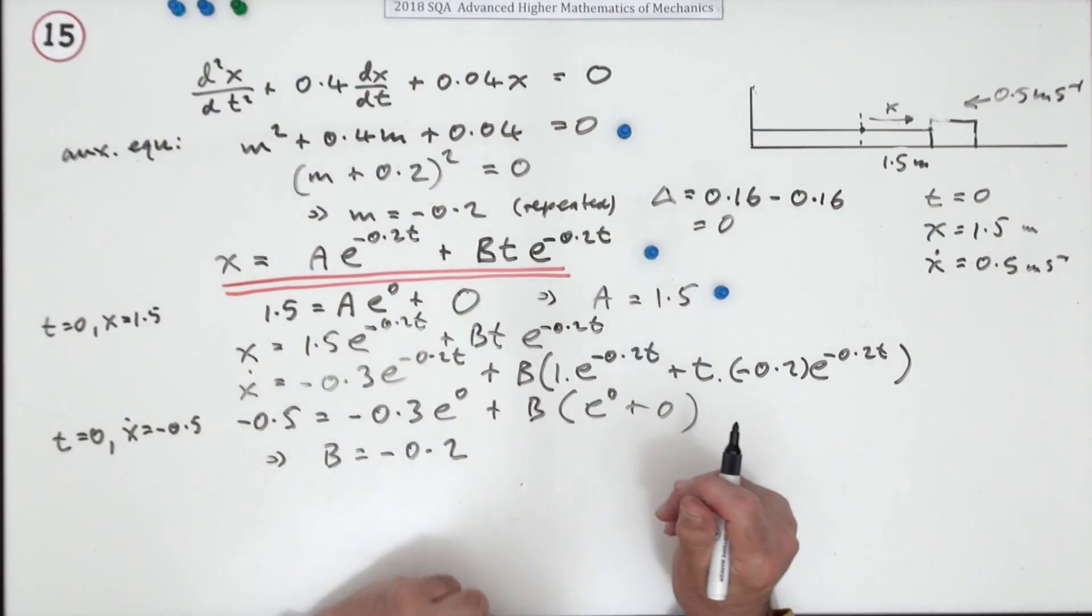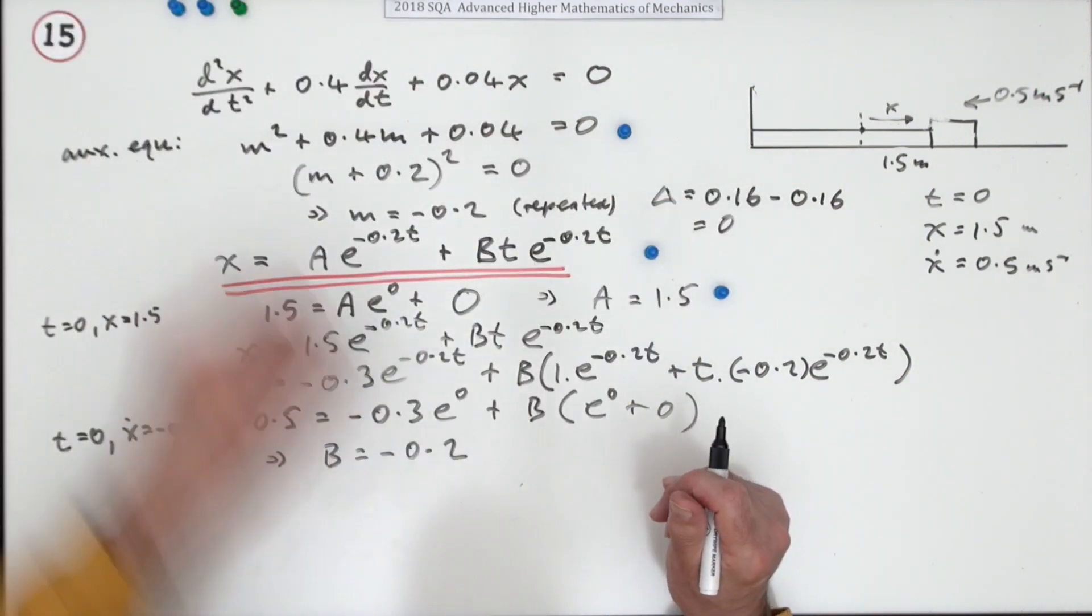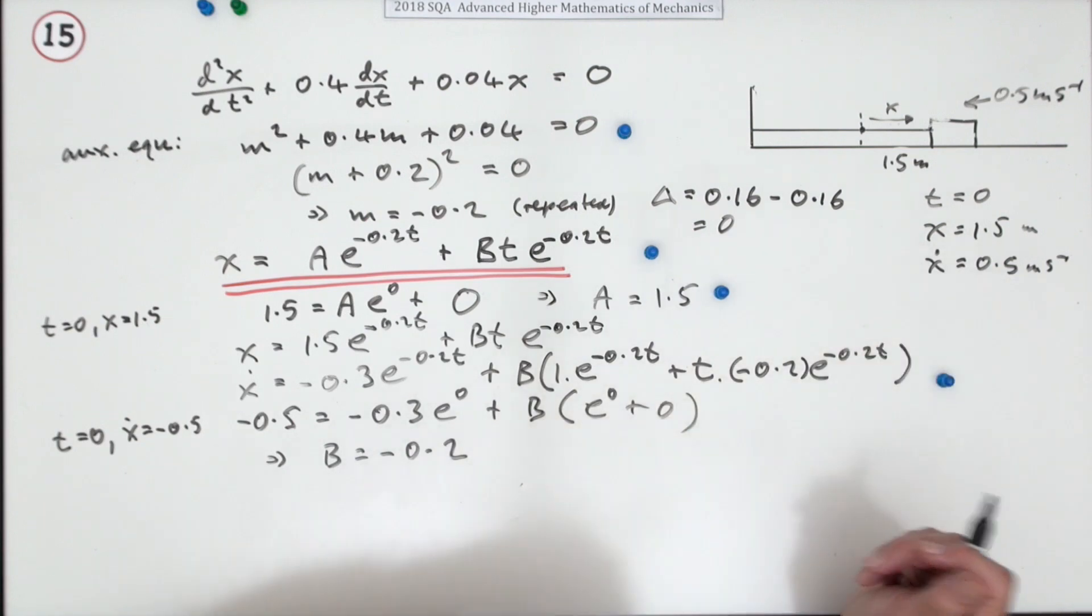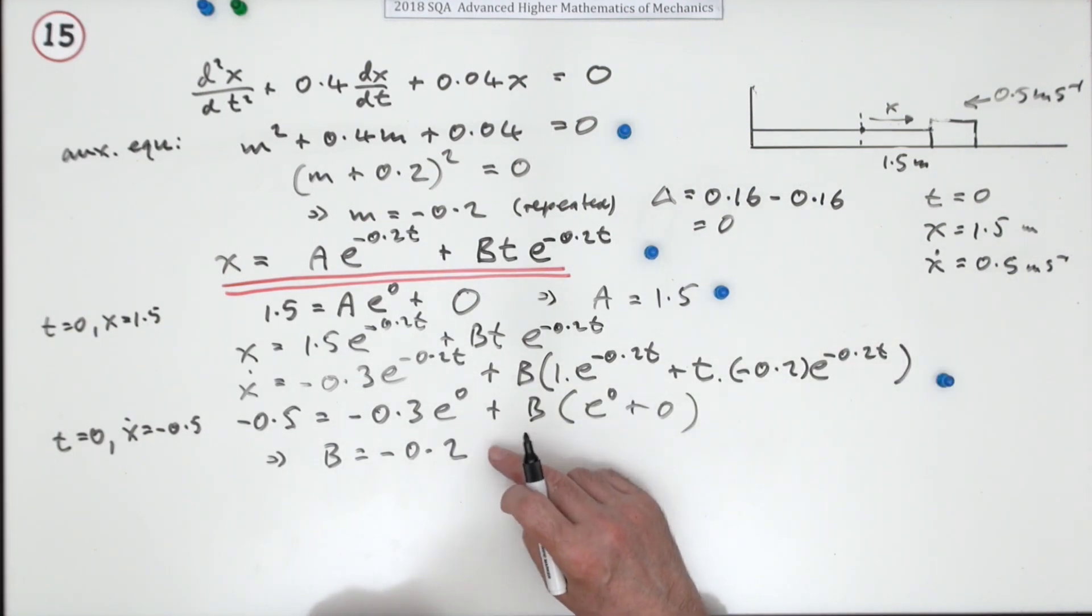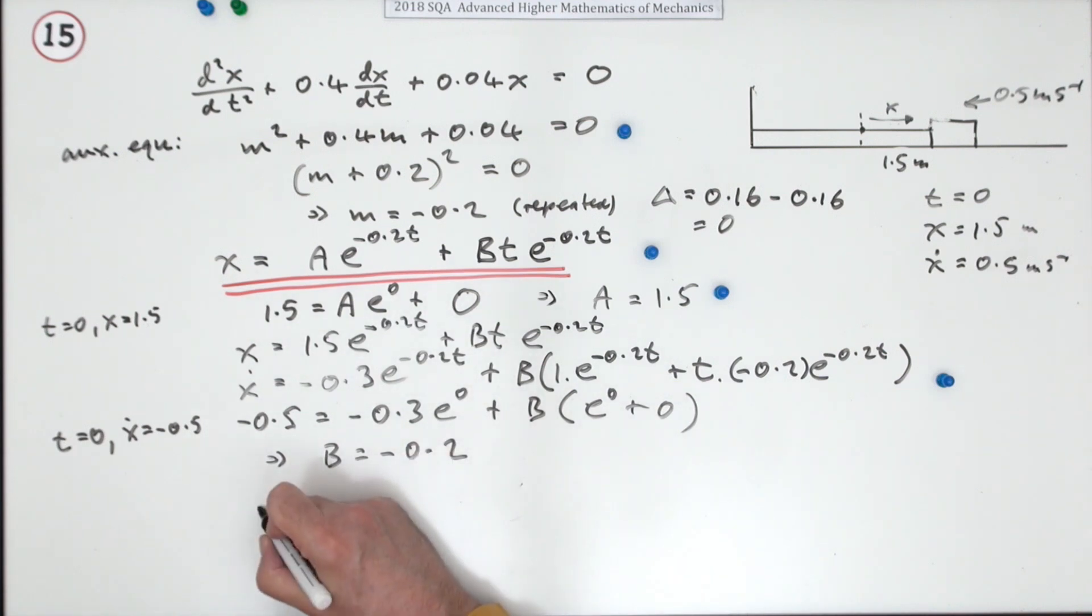Because B... that's just 1, that just means B is going to equal, and that's just 1, that across to there, which is negative 0.2. Now I forgot the marks. There was one mark for getting the first constant A, there was a second mark for differentiating it, and the third mark will be for finding B and then just putting it all back.